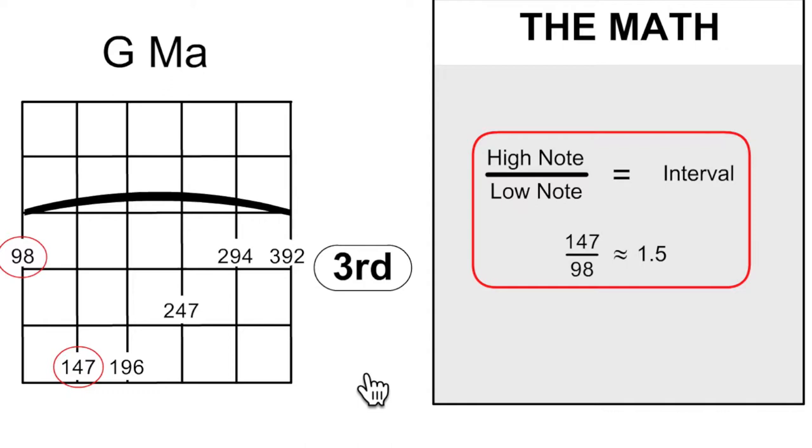Now that's the 3 to 2 ratio. That's the perfect fifth interval. And the frequency of the high note divided by the low note equals the interval. That's the math. And that holds for all intervals, semitones, perfect fifths,